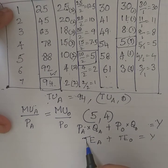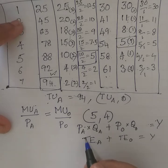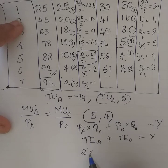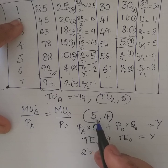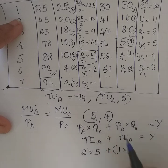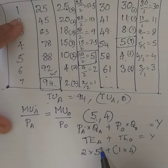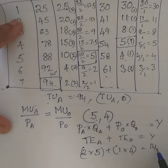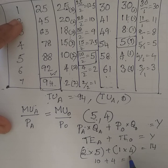Checking the budget constraint: price of apple (2) × units consumed (5) + price of orange (1) × units consumed (4) = 10 + 4 = 14. This equals the income of 14, confirming the entire income is spent. The equilibrium condition MUA/PA = MUO/PO = 5 is also satisfied.